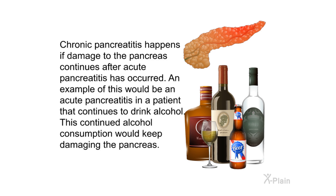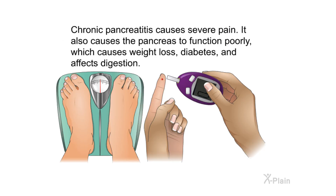Chronic pancreatitis happens if damage to the pancreas continues after acute pancreatitis has occurred. An example would be a patient with acute pancreatitis who continues to drink alcohol — this continued alcohol consumption keeps damaging the pancreas. Chronic pancreatitis causes severe pain and also causes the pancreas to function poorly, which leads to weight loss, diabetes, and affects digestion.